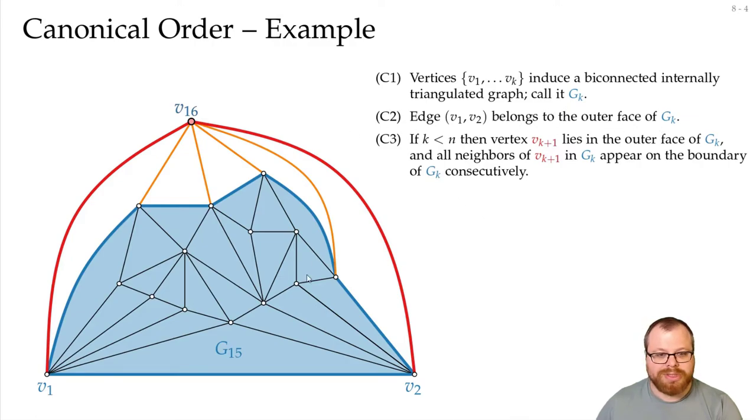Clearly condition C2 holds, and in the future I will not look at it again, since it's clear from now on that this will always be on the outer face. But what about C1 and C3? Is this graph still biconnected and internally triangulated? Well, internally triangulated is clearly yes, and biconnected we can see that it is because the outer face is still a simple cycle. All the faces are simple cycles, so everything works out.